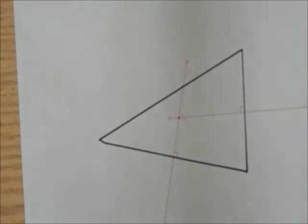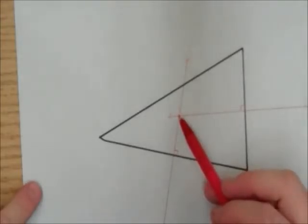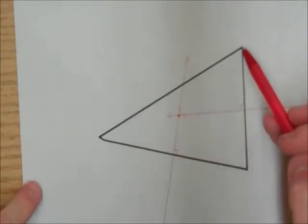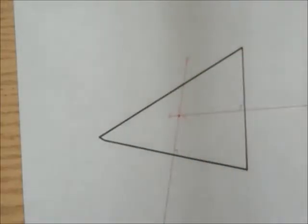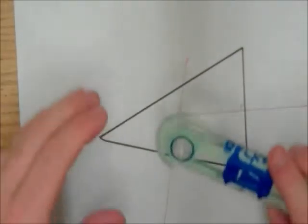So theoretically, if I did this correctly, I should be able to put the point of my compass right here, open it as far as one of the vertices, draw a circle, and I should get a perfect circle. So let's see what happens here.